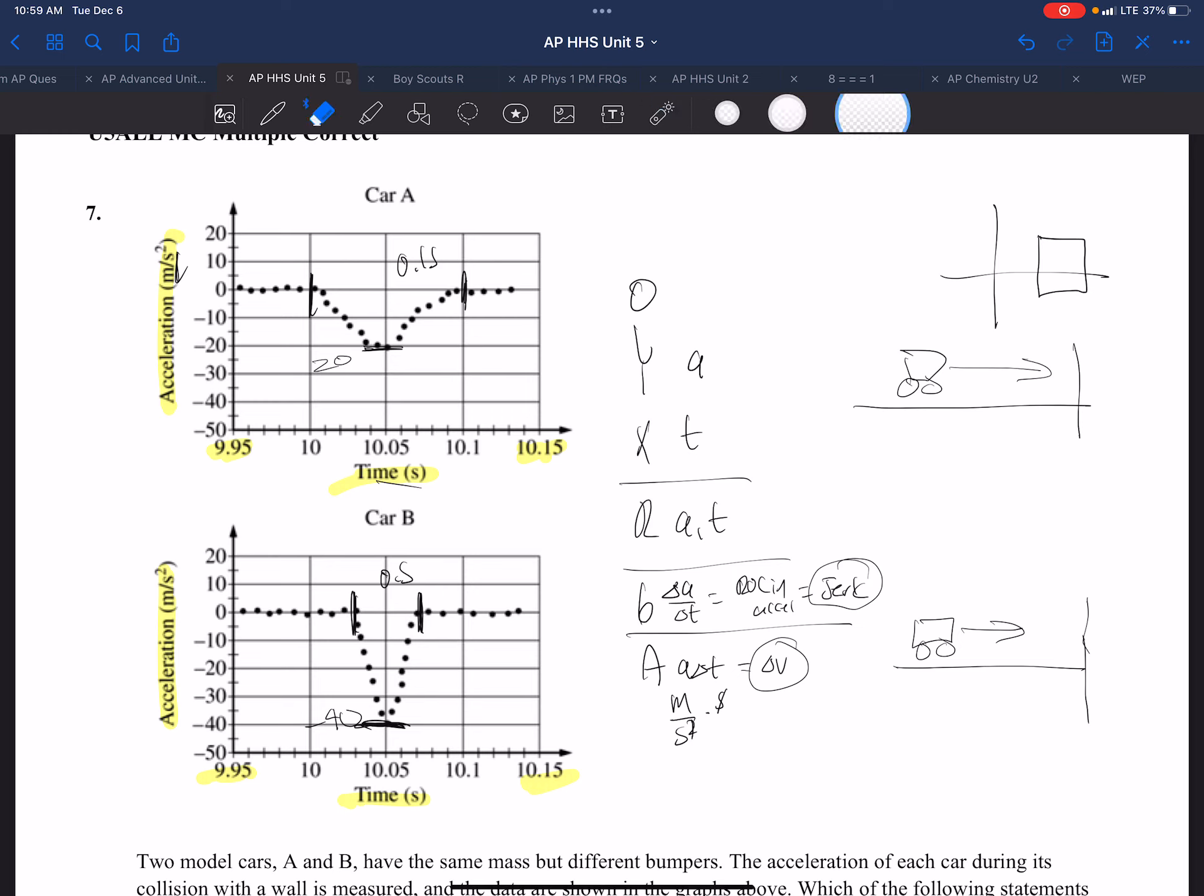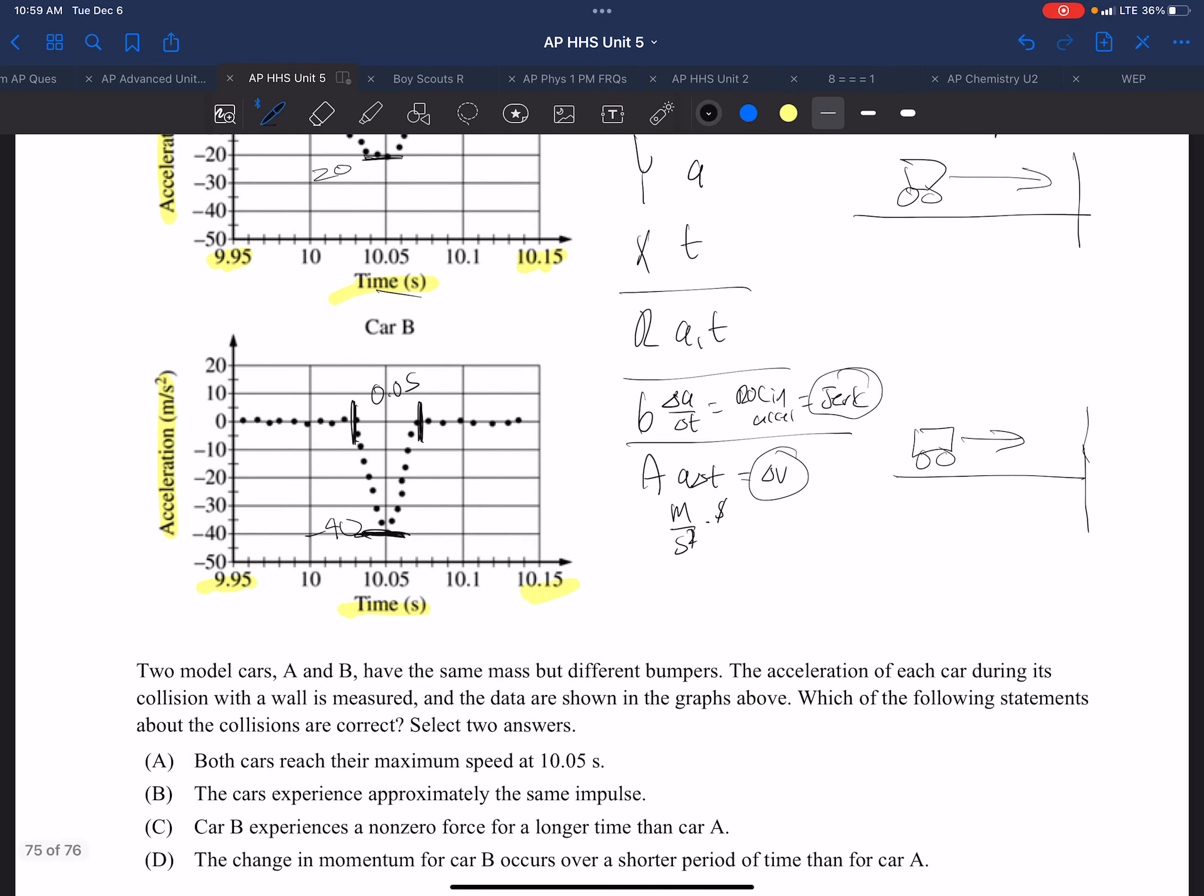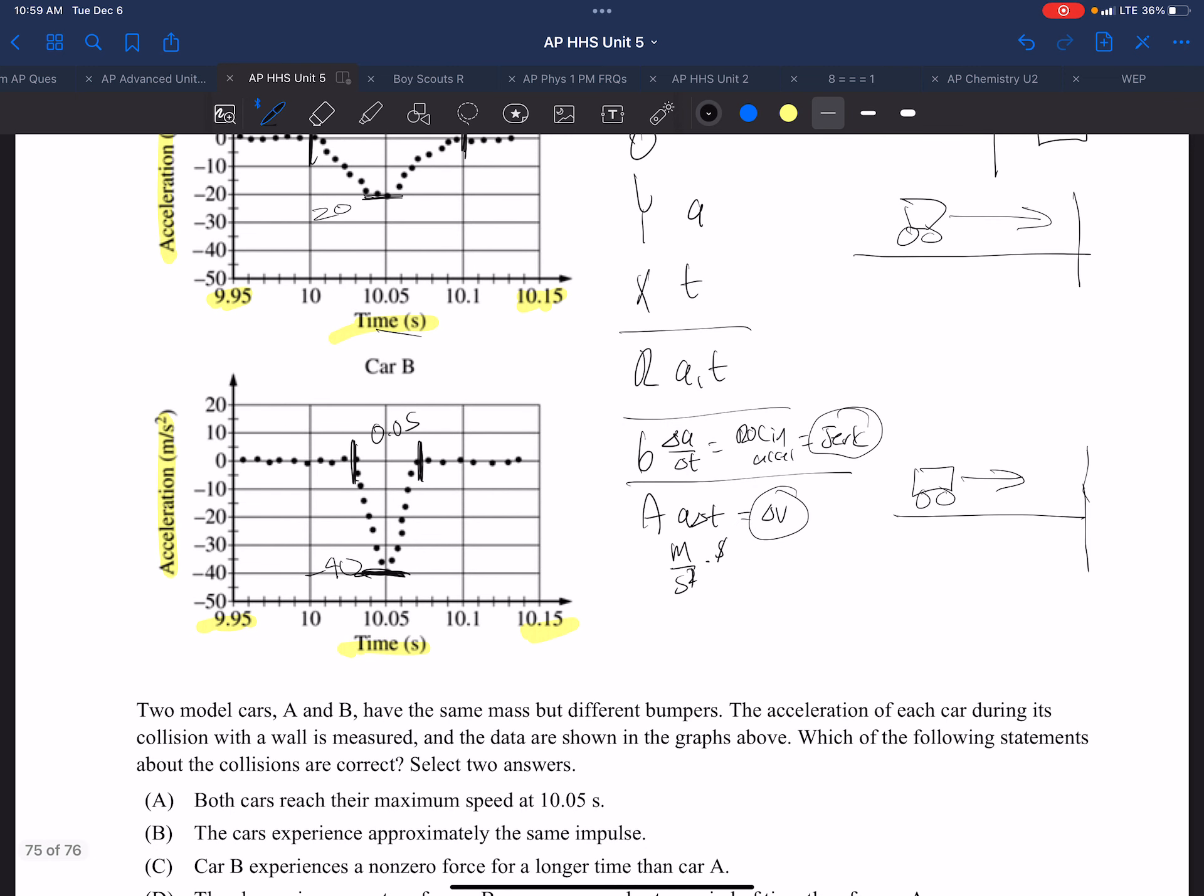Which statements about the collisions are correct? Both carts reach their maximum speed at 10.05 seconds. Well, 10.05 seconds is when they actually stop. The biggest acceleration is right at the very end when they're stopping, so that is out.